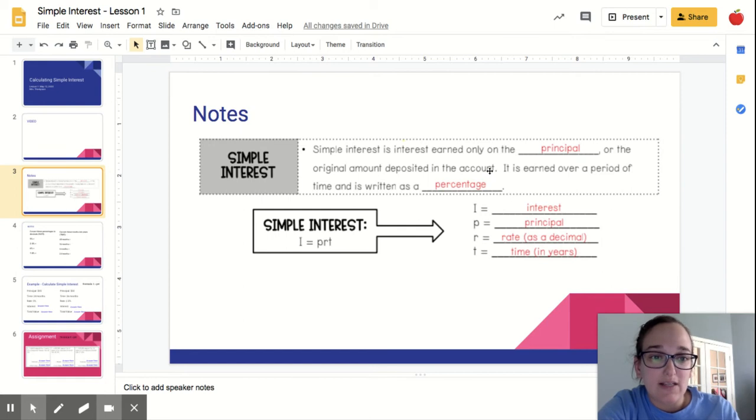So calculating simple interest, simple interest is the interest earned only on the principal or the original amount deposited into an account. It's earned over a period of time and it's written as a percent. So when we are calculating simple interest, we have a formula. It's I equals PRT.